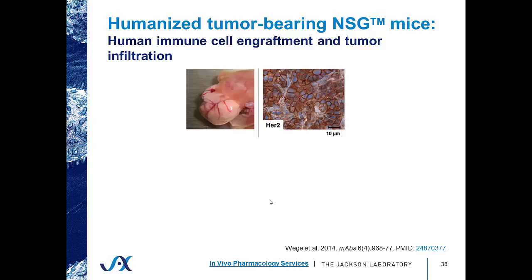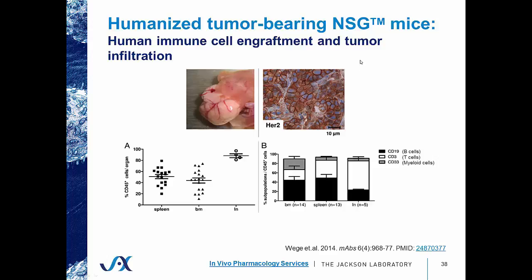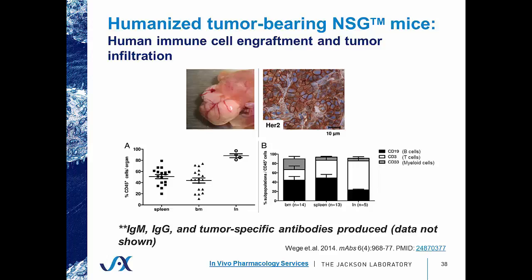The investigators demonstrated that tumor cells grew into palpable tumors and retained their HER2 positivity. They also looked at human immune cell populations in the spleen, bone marrow, and lymph node, and saw substantial human CD45-positive immune cells in all of these organs. They demonstrated B cell, T cell, and myeloid subpopulations across these organs, and also measured antibody production including IgM, IgG, and tumor-specific antibodies.